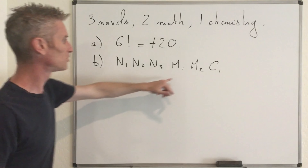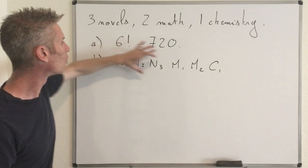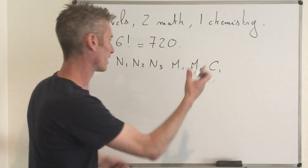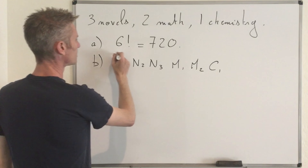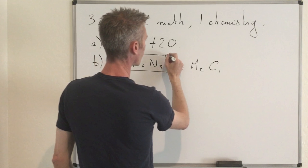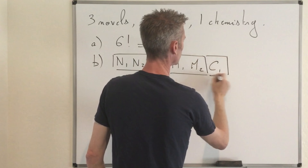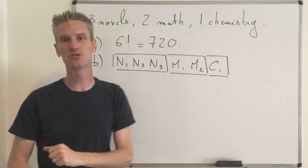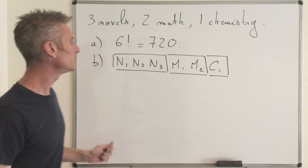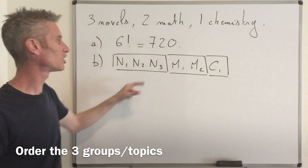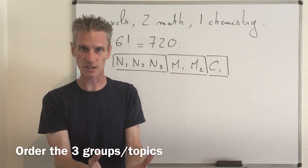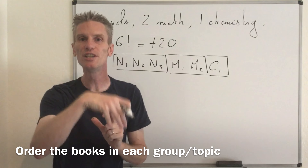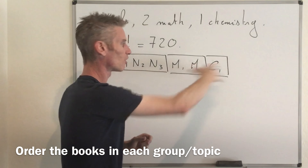So let me remind you what the trick is. Here we want to have all three novels together, the two math books together, and the chemistry book — which is just one book on its own. So you draw a picture where you exhibit those blocks that must be together. The total number of possible permutations such that the three novels are together and the two math books are together is exactly equal to the number of permutations of those three groups times the number of permutations within each group.